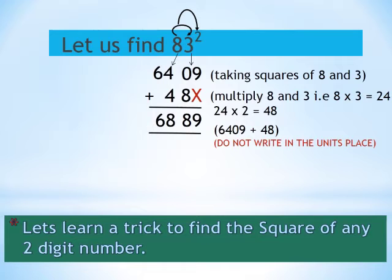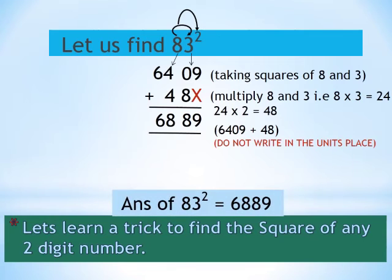Friends, here we found the answer. Square of 83 is 6889. Isn't it easy and quick?